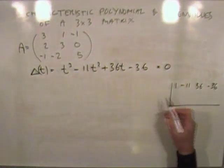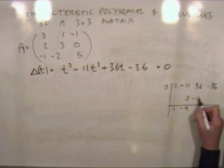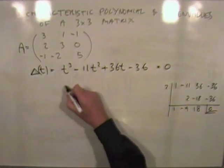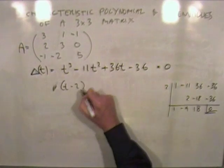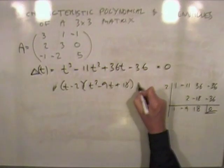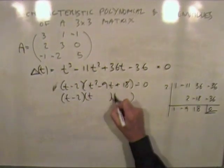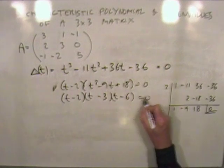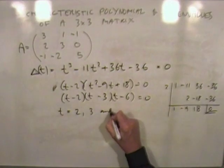Since there are only three brackets expected, trying t equals two in synthetic division: one, two, negative nine, negative eighteen, eighteen, negative thirty-six, giving remainder zero. So t minus two is a factor, leaving t squared minus nine t plus eighteen equals zero. Factoring that gives t minus two times t minus three times t minus six equals zero, so the eigenvalues are two, three, and six.